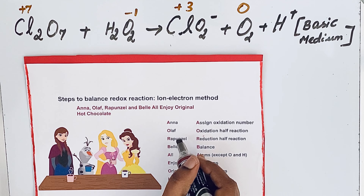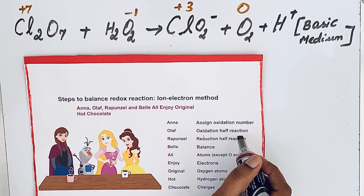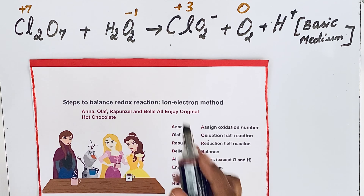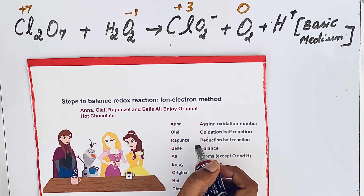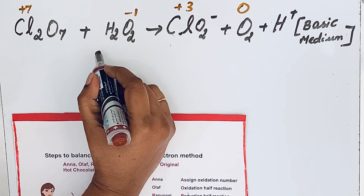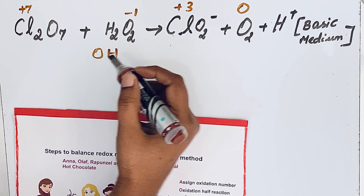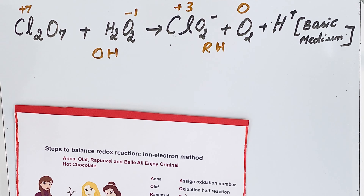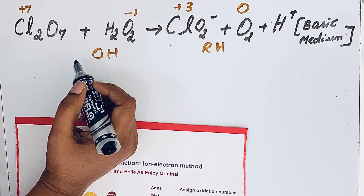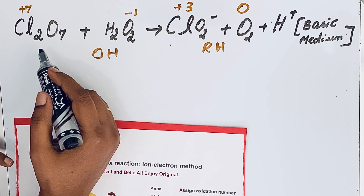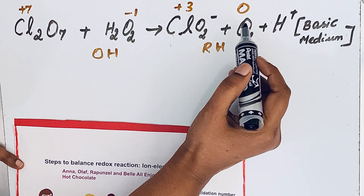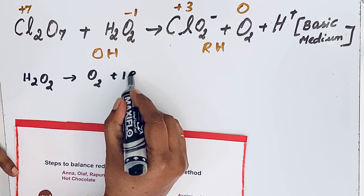We completed the first step. The second step is the oxidation half-reaction. We are going to split the whole reaction into two half-reactions: the oxidation half-reaction and the reduction half-reaction. Oxidation is an increase in oxidation number. In H₂O₂, the oxidation number increases from -1 to 0, a difference of one, so one electron is lost.